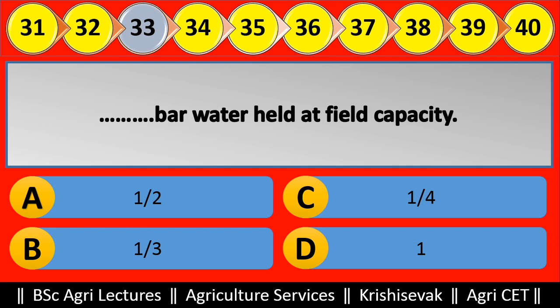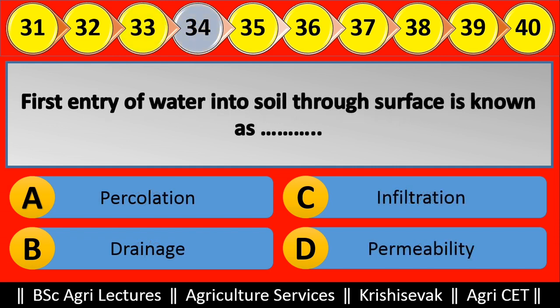Question 34: First entry of water into soil through the surface is known as blank. Options are: (a) Percolation, (b) Drainage, (c) Infiltration, (d) Permeability. Right answer is Infiltration, option C.